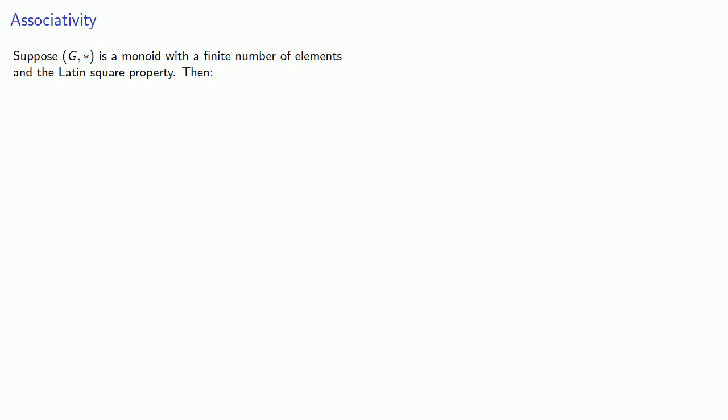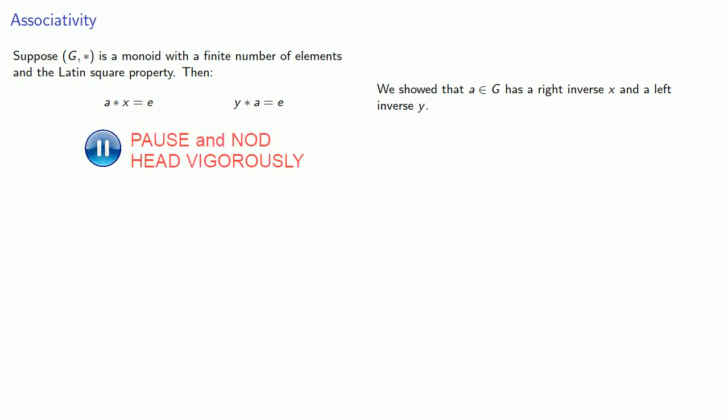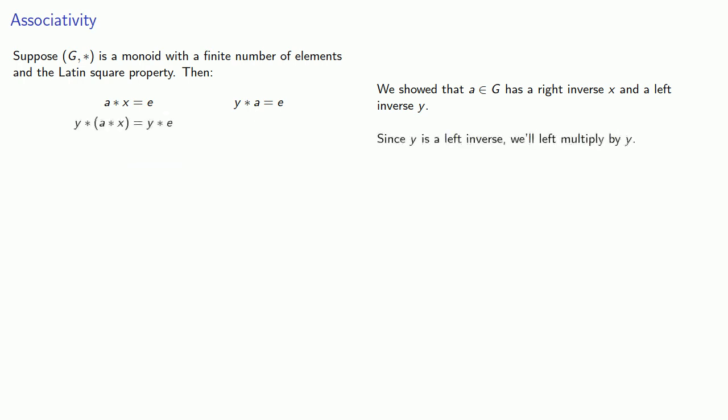So suppose G-star is a monoid with a finite number of elements and the Latin square property. We already showed that A in G has both a right-inverse X and a left-inverse Y. So we know that A-star X is the identity, and also that Y-star A is the identity. Now since Y is the left-inverse, we'll left-multiply by Y. And the important thing here is that A-star X is already there, so when we star it with Y, we have to treat A-star X as a single thing, enclosing it in parentheses.